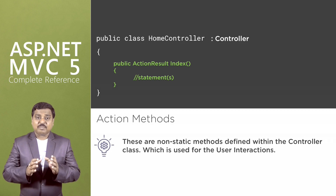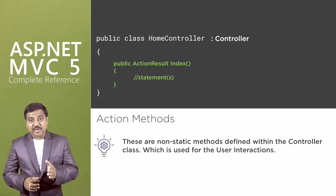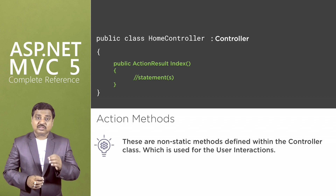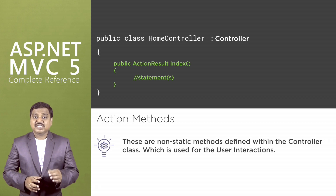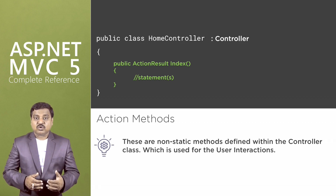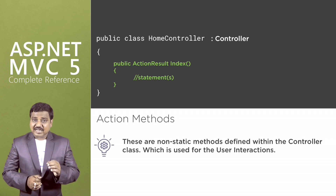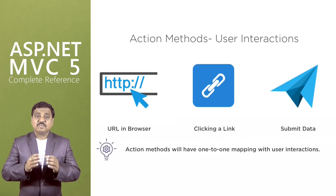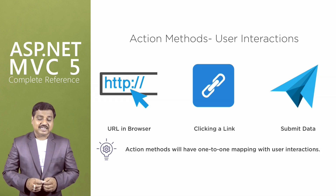In ASP.NET applications, user interaction is organized around pages, handling events from the page and form controls on the page. But in ASP.NET MVC applications, the user interaction is organized around controllers and action methods. The controller defines the action methods, and controllers can include any number of action methods as per the requirement.